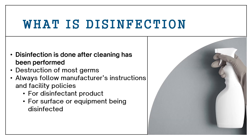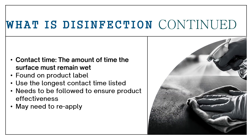Disinfection is the killing and prevention of most types of germs. We should always refer to the manufacturer's instructions for the disinfectant and the surface or piece of equipment being disinfected to ensure that we are disinfecting properly. In the product label for the disinfectant, you will be able to find the contact time. The contact time is the amount of time the surface has to be visibly wet for the disinfectant to kill what it is labeled to kill. You may see many contact times ranging from seconds to minutes depending on the type of germ. Always use the longest contact time listed, and you may have to reapply the product to prevent drying before contact time is up.